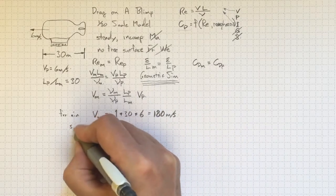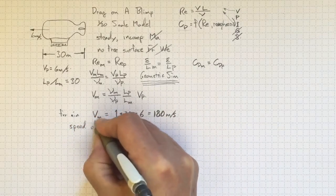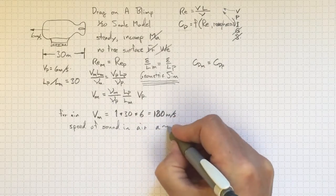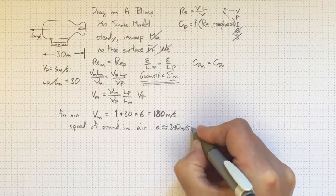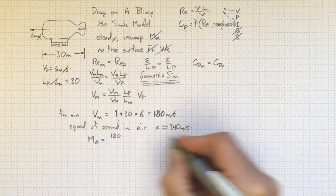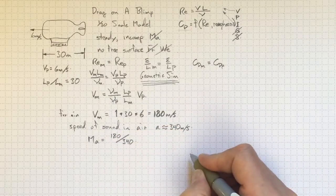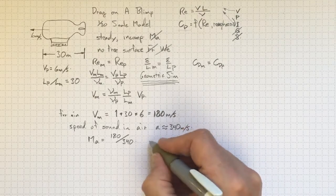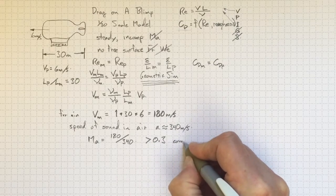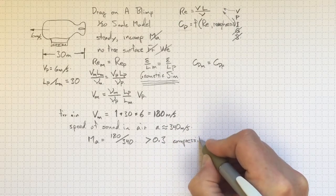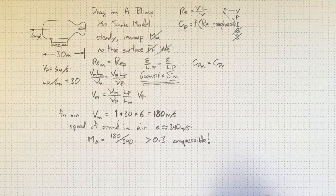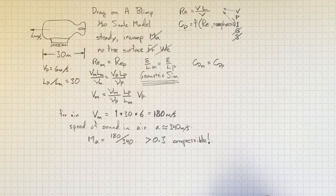180 meters per second, though. That's really fast. Speed of sound in air is about 340 meters per second. That would give me a Mach number equal to 180 divided by 340. That's more than half, more than 0.5. Significantly greater than 0.3. Compressibility is going to be important. So, testing in air would turn out to be a bad idea. What to do?